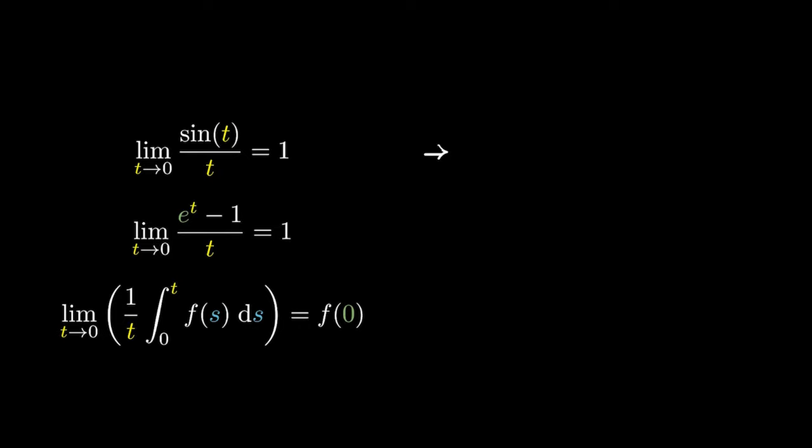Finding the limit of sine of t over t equaling 1 actually helps us derive that the derivative of sine is cosine.